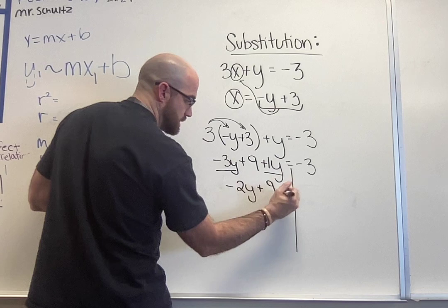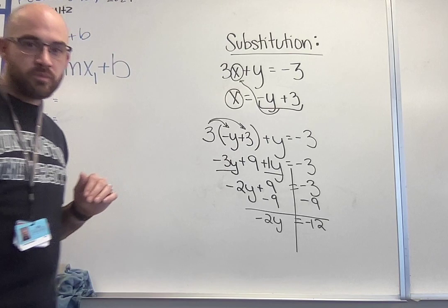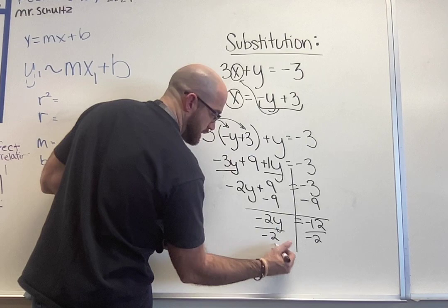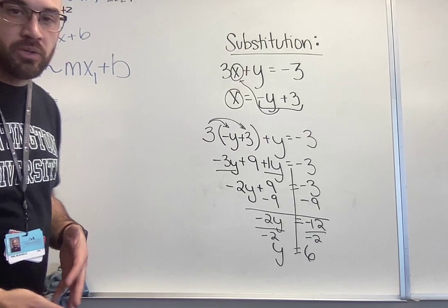So negative 3 plus 1, we combine our like terms, gets me negative 2y plus 9 equals negative 3. From here we're solving so I'm going to subtract my 9 from both sides. I got negative 2y equals negative 12. At this point I can divide both by negative 2 to get my y completely by itself and I get y equals 6. This is half of my answer. I have now found my y value for my point.